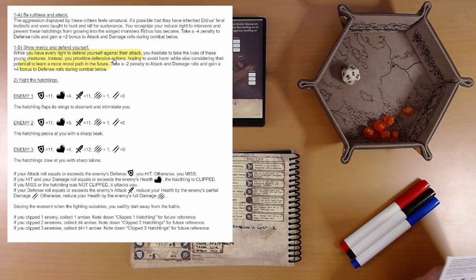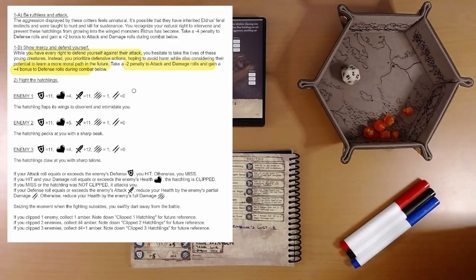Take a minus two penalty to attack and damage rolls. And gain a plus four bonus to defense during the combat below. And now we fight the hatchlings.